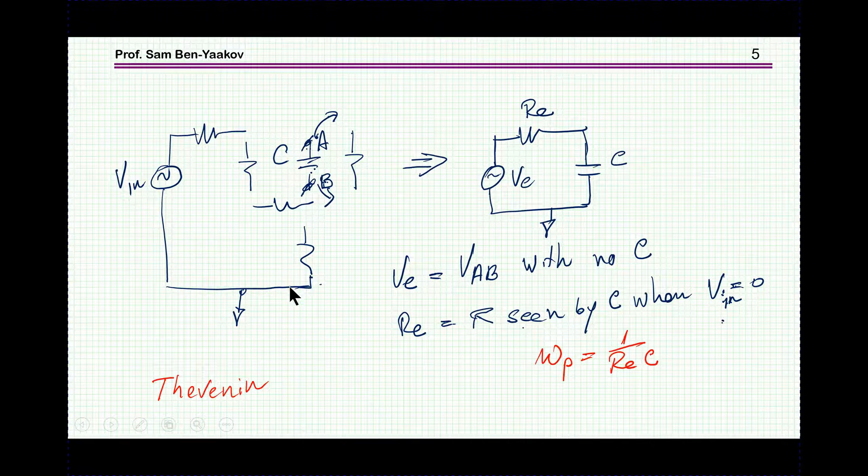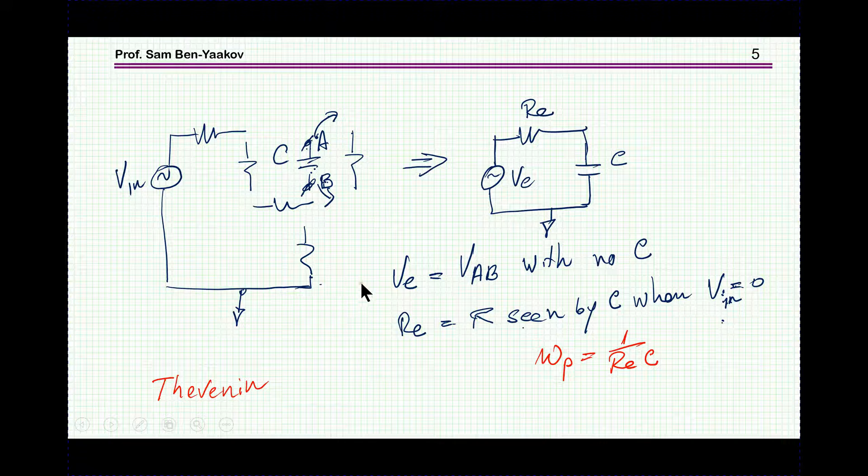In a more complicated system, you can do the same thing, just separate the capacitor, look back, find out what is the equivalent resistance, and then, of course, the pole here is 1 over RC, and the time constant is RC. So, this is a very neat way to very quickly find out the time constant of the system, if you have many resistors, one capacitor.